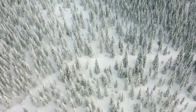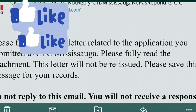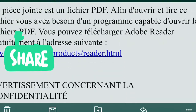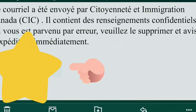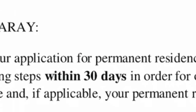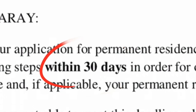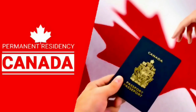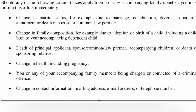The first requirement is the passport request letter from IRCC. Let me show you the copy of the letter that came from IRCC. Normally you just have to scroll down until you see this attachment, which says that the processing of your application for permanent residence in Canada is almost complete, and you must complete the following steps within 30 days in order for the office to issue your confirmation of permanent residence.